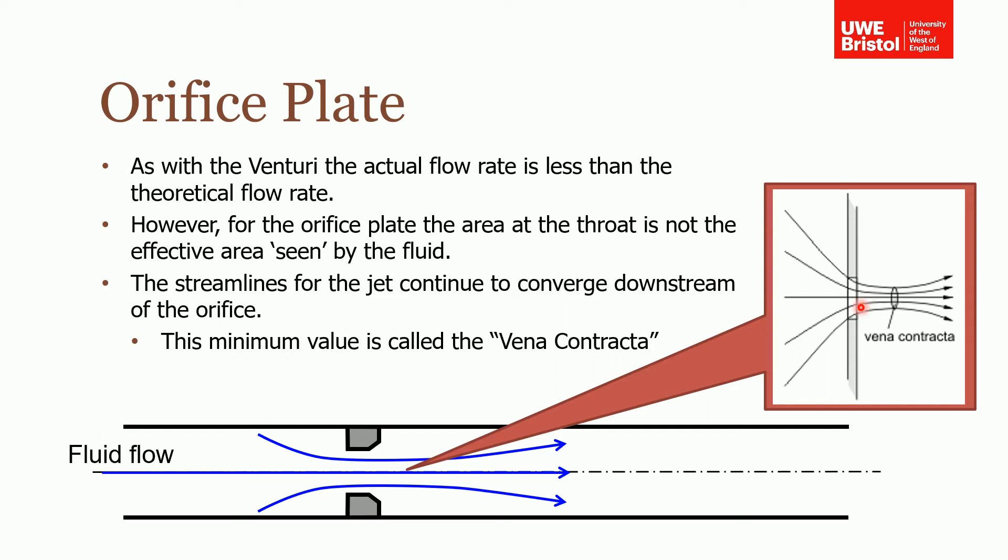So therefore when we come to Bernoulli's and we're talking about the area downstream, this is the area that we're talking about, not this area, because this area is smaller and would be more restrictive. That's the actual area that it's flown through and as I say it's called the vena contracta.